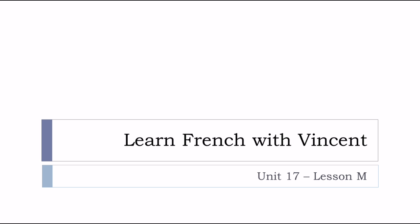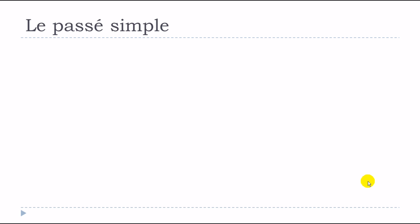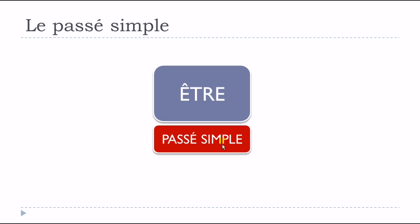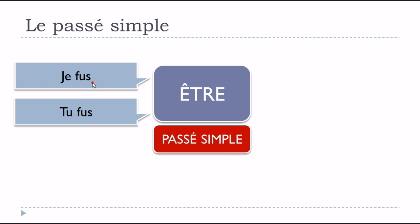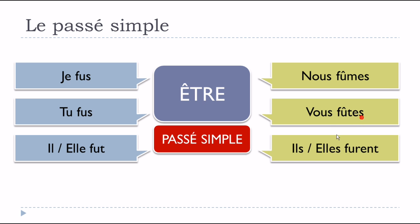Bonjour à tous and welcome to Learn French with Vincent. This is Unité 17, Leçon M. We'll see le passé simple du verbe ÊTRE. Être au passé simple: je fus, tu fus, il fut, elle fut, nous fûmes, vous fûtes, ils furent, elles furent.